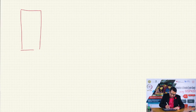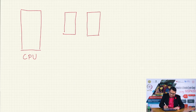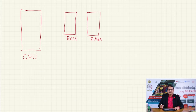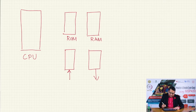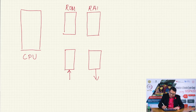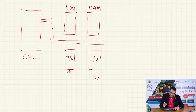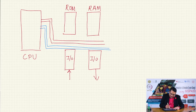In the diagram, we have a CPU, two types of memory — ROM which stores the program and RAM which is used for variables — and input/output devices. The CPU communicates with these components through buses: a data bus, an address bus, and a control bus, which indicates whether data is being read or written.